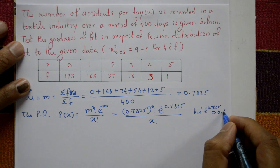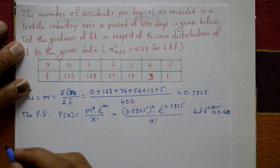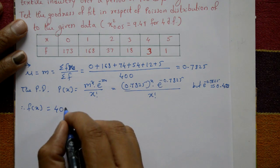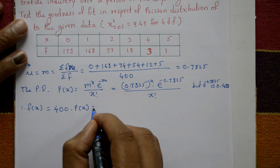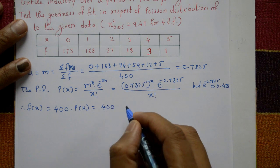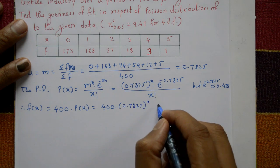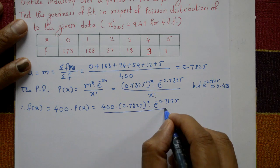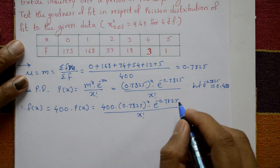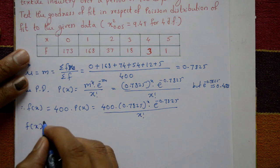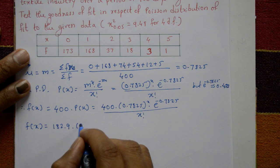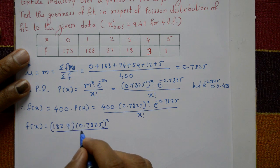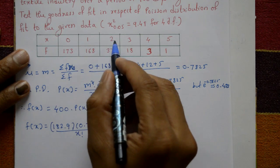Therefore, the expected frequency f(x) equals total frequency 400 multiplied by P(x). So f(x) = 400 × (0.7825)^x × e^(−0.7825) / x!, which simplifies to f(x) = 182.9 × (0.7825)^x / x!. Now substitute x = 0, 1, 2, 3, 4, and 5 to find each expected frequency.